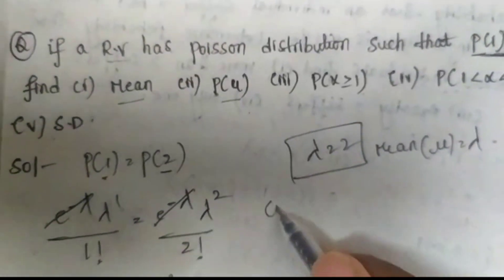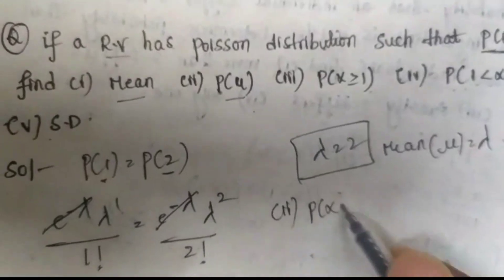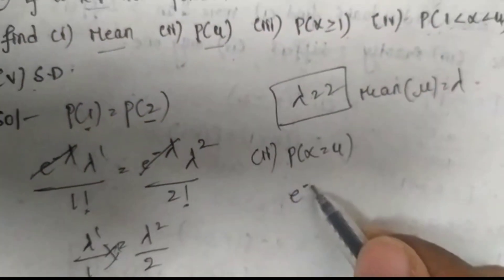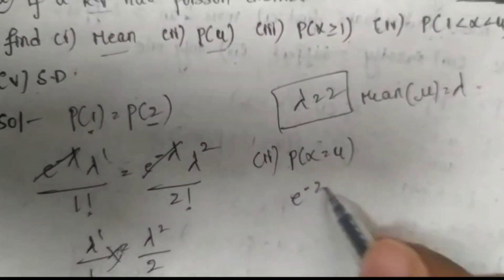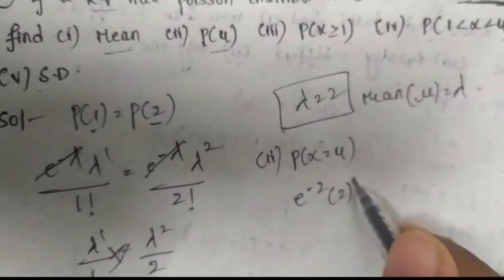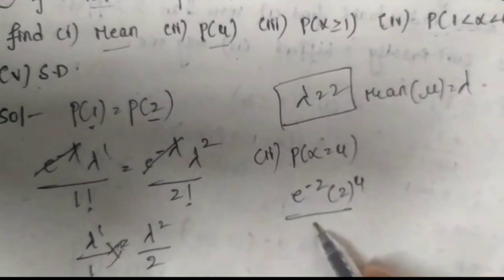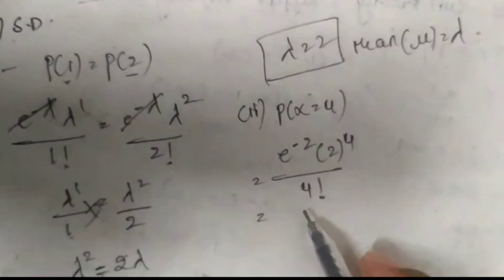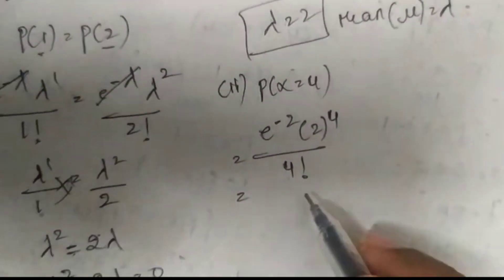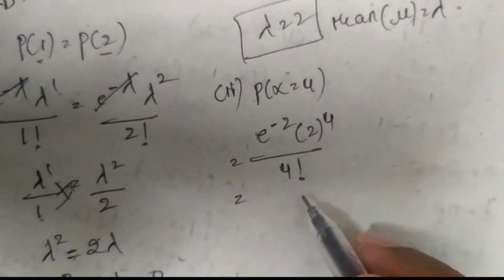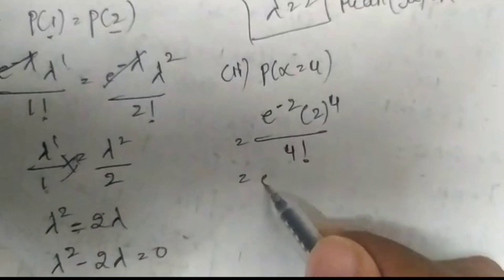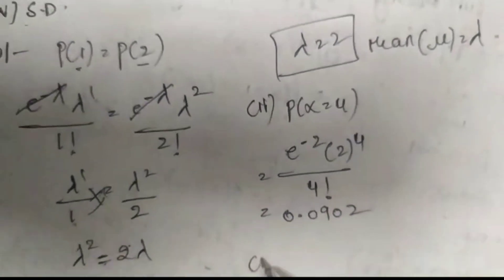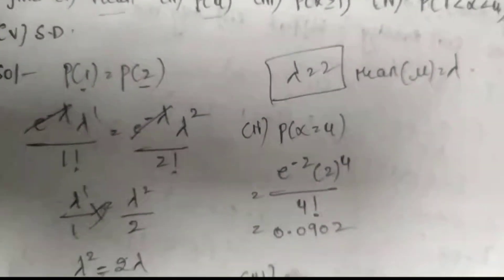Now finding P(X = 4). Substituting in the formula: e^(−2) × 2^4 / 4!. Calculating in the Casio, we get the answer 0.0902.